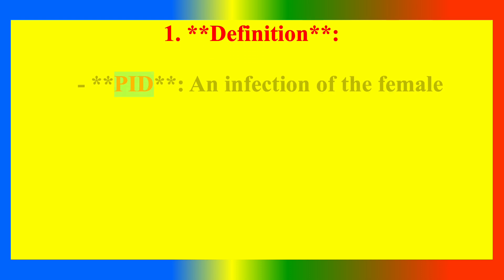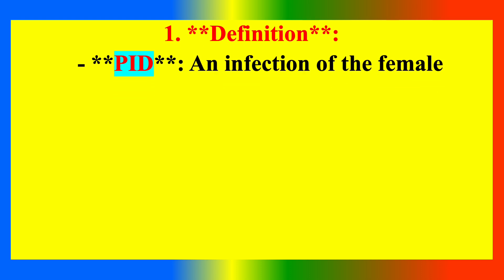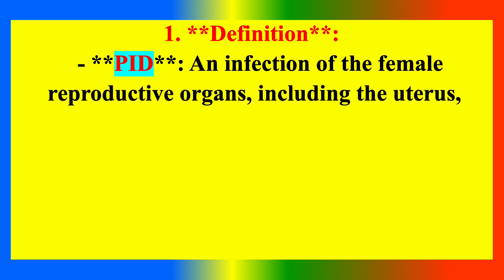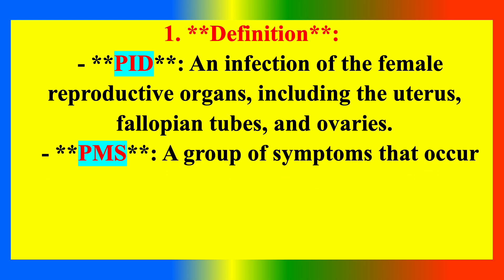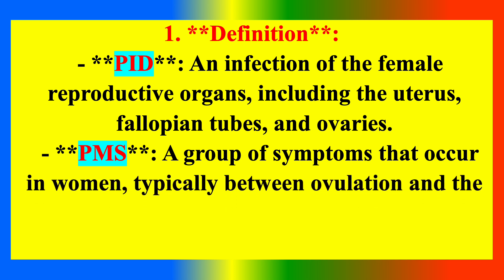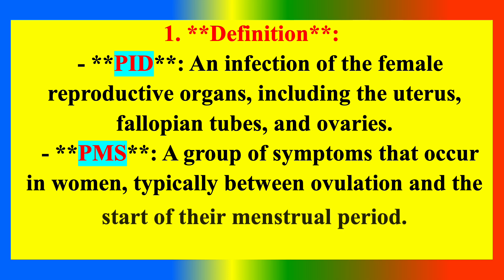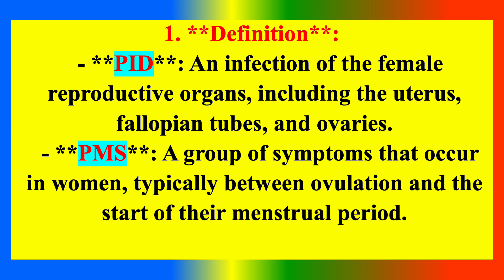On definition: PID is an infection of the female reproductive organs including the uterus, fallopian tubes and ovaries. PMS is a group of symptoms that occur in women typically between ovulation and the start of their menstrual period.